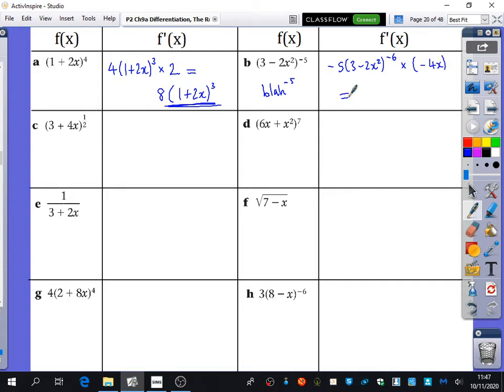So first of all, deal with the numbers. Actually, before that, deal with the positives and negatives. We have a negative and a negative, so it's going to be a positive. And I have a 4 and a 5, which is a 20 and an x. So it's 20x, 3 minus 2x squared to the minus 6.